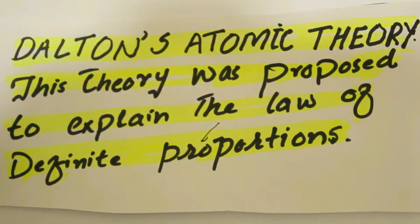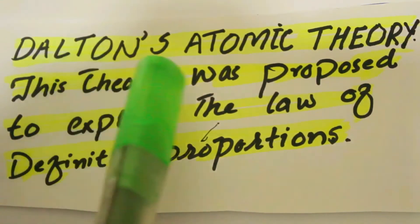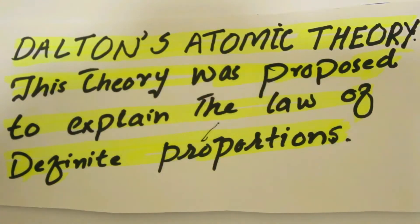Today we are going to discuss Dalton's Atomic Theory. Who proposed this theory? The answer is this theory was proposed by an English school teacher, John Dalton. Now the question is why he proposed this theory. He basically proposed this theory to explain the law of mass conservation and the law of definite proportion.